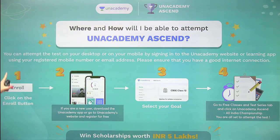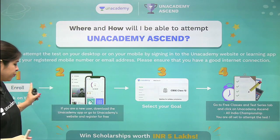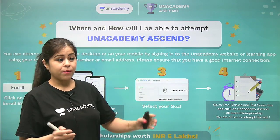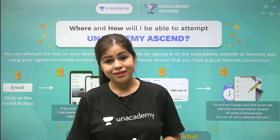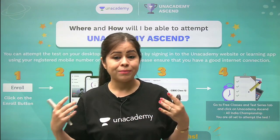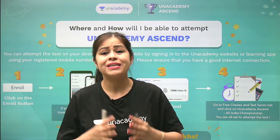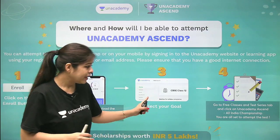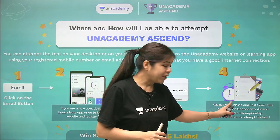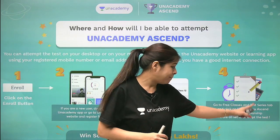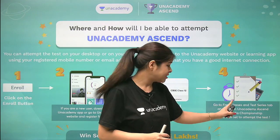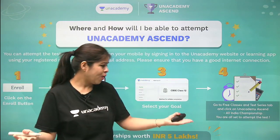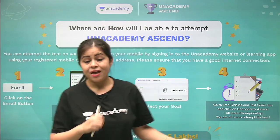So students, करना क्या है — step 1 में आपको enroll करना है, उसके बाद आपको goal select करना है। Suppose आपका goal CBSE class 12th है तो 12 select करना है, 11th है तो 11 select करना है, क्योंकि हमारी series 6 से लेके 12 तक का test है। तो आप जिस भी class में हैं अपना goal select करिए। Goal select करने के बाद आपको free classes and test series tab पे click करना है, जहां you will find Unacademy Ascend All India Championship and you are all set to attempt the test.